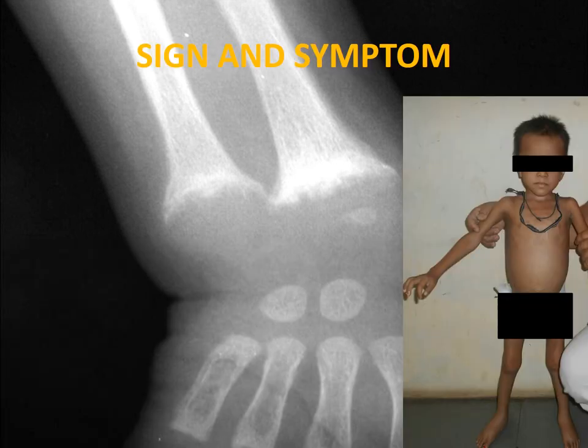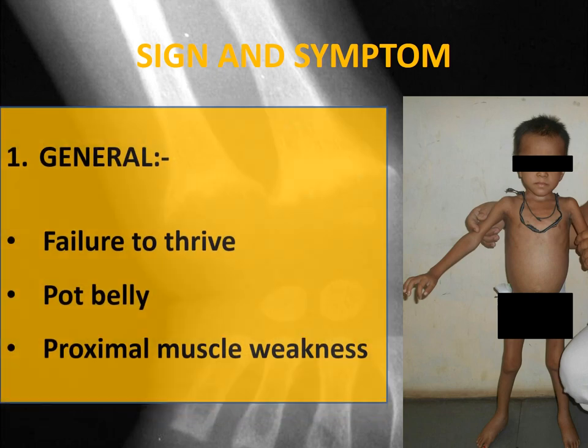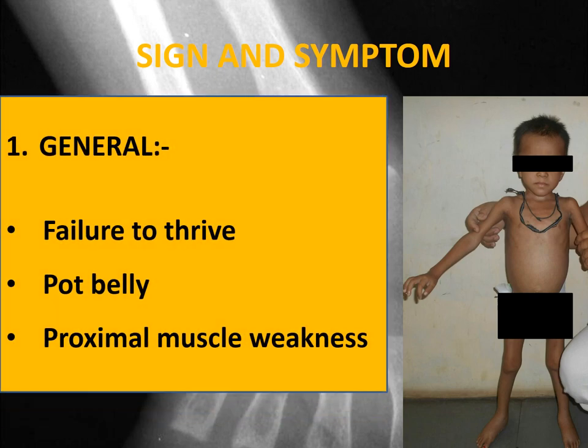There are various signs and symptoms of rickets in children. I will tell you all the signs and symptoms according to the body part. In general, failure to thrive, pot belly, and proximal muscle weakness will be there.